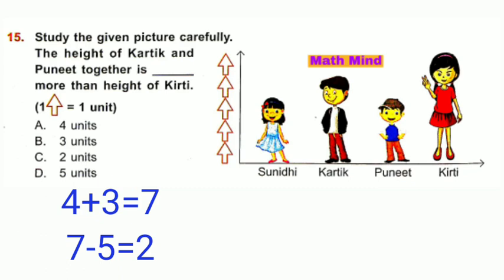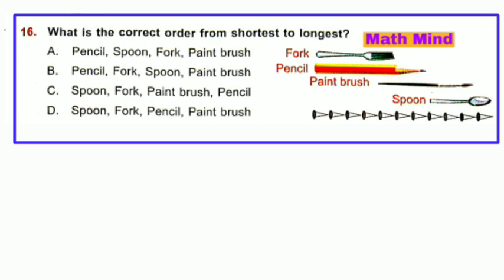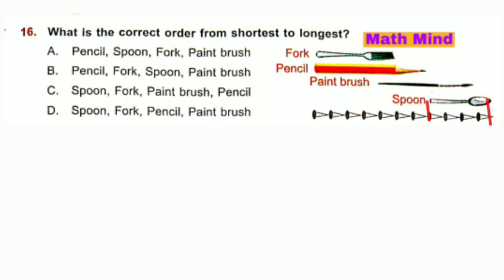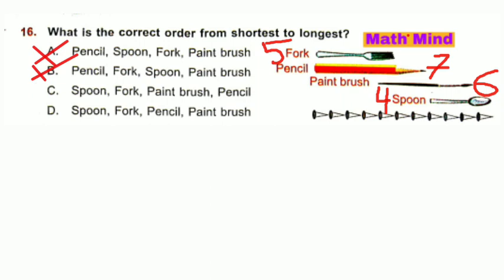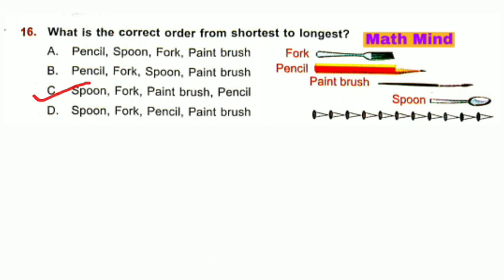Question number 16: What is the correct order from shortest to longest? Spoon: 4 units, paint brush: 6 units, pencil: 7 units, fork: 5 units. Arranging shortest to longest: spoon is shortest, so options C and D are correct, A and B cancelled. Next is fork (5 units), then paint brush (6 units). So, option C is correct. Correct order: spoon, fork, paint brush, pencil.